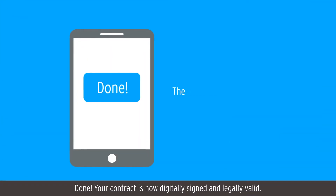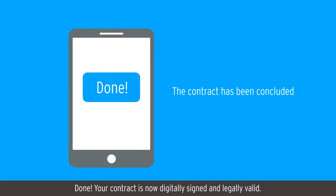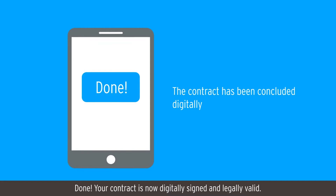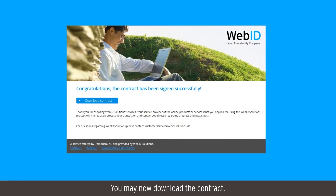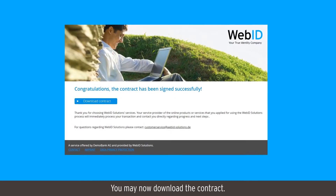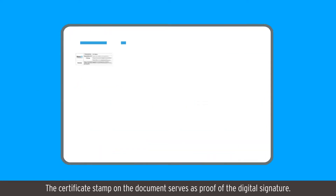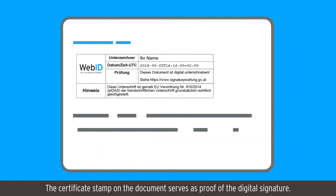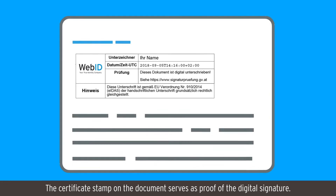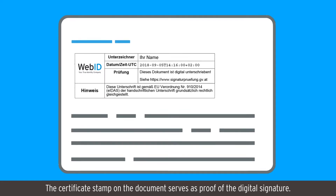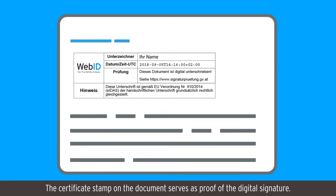Done! Your contract is now digitally signed and legally valid. You may now download the contract. The certificate stamp on the document serves as proof of the digital signature.